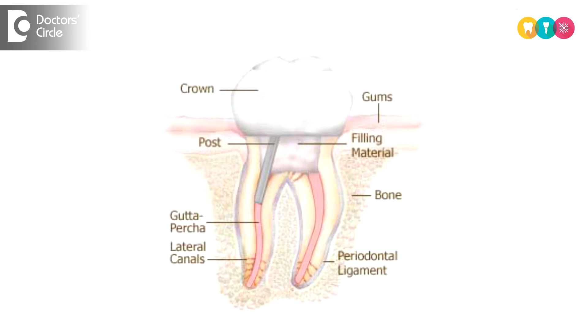Sometimes we even see the swelling after the fixing of a crown. One of the reasons for this might be because of improper margins. When the margins of the crowns are not proper, it lodges food into them, which in turn causes the swelling of the gums and irritation to the patient.